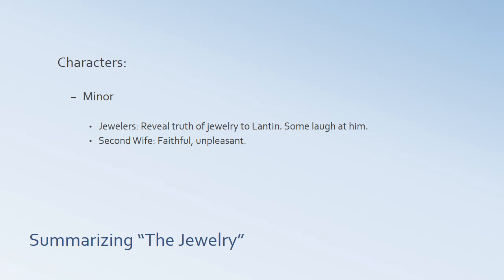The minor characters: there are the jewelers that Lantan goes to in order to sell the jewelry — they are the ones who reveal that it's real, not fake, and some of them laugh at him. And there's also the second wife, mentioned very briefly at the end of the story. We know that she is very faithful and morally upstanding, but she is also an unpleasant person — she's a contrast to the first wife.